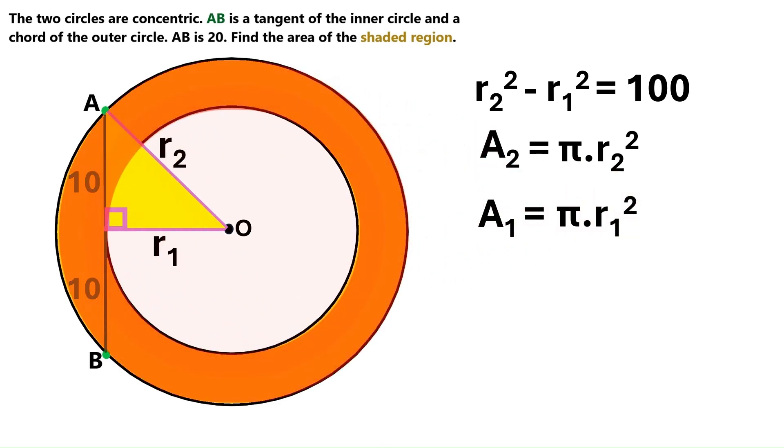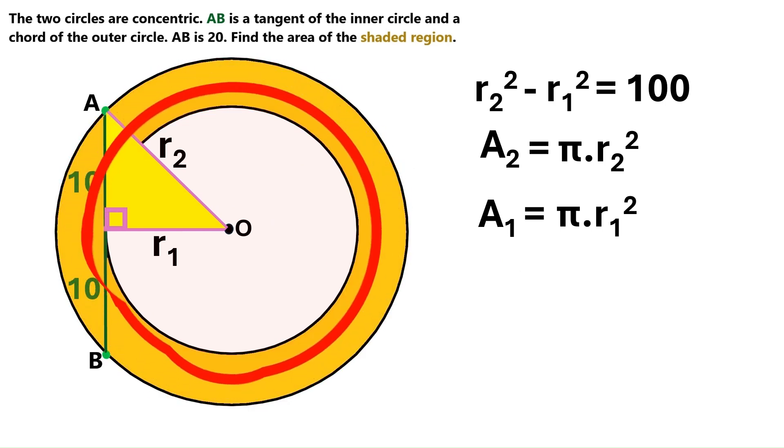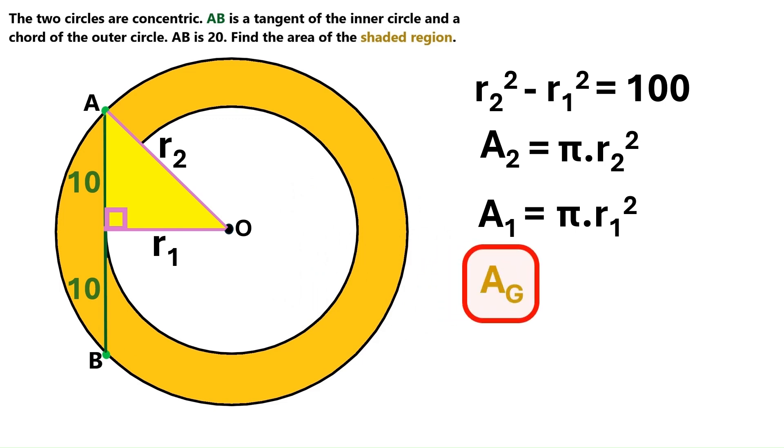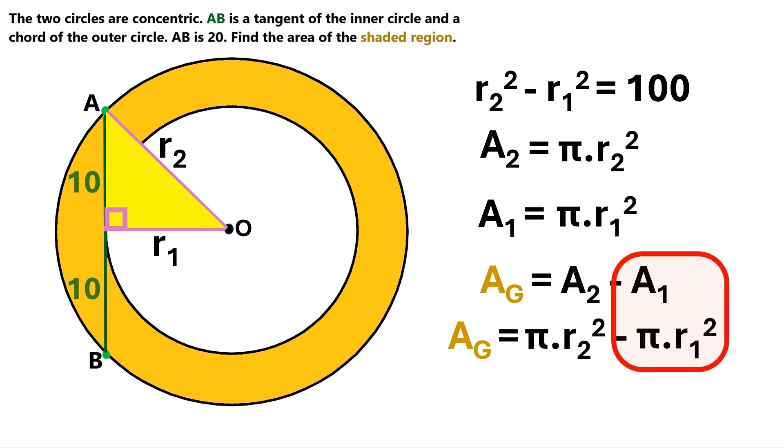We are trying to find this area. And it is obvious that it equals the area of the outer circle minus the area of the inner circle. We will now write down an equation to show that. Let's name the shaded area AG because it is gold colored. AG equals A2 minus A1. A2 is Pi times R2 squared, so let's bring that down here. And A1 is Pi times R1 squared. Let's also bring that down here.